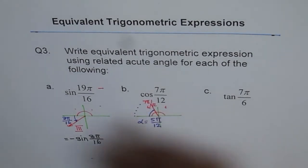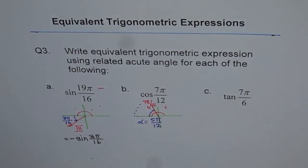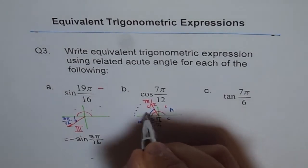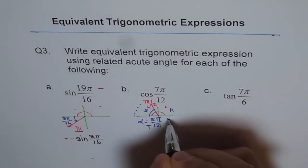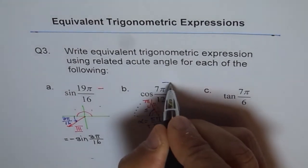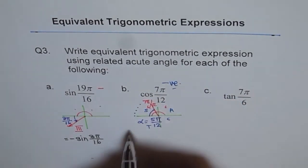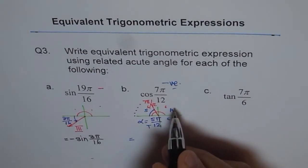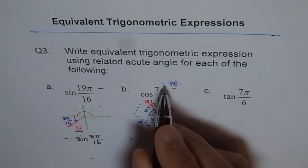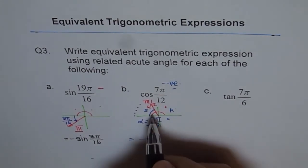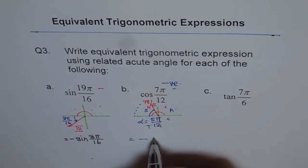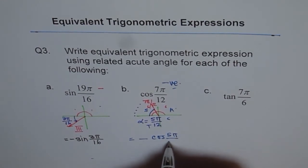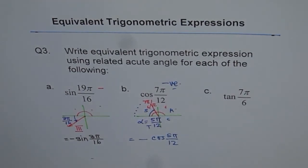Now cos is negative here. How do we know? Cos rule. C, A, S, T. So here only sine is positive. Cos is negative. So we are looking for a negative answer. Do you see that? So we can write this as related acute angle will always be positive. All are positive here. So we will write it with negative. Negative of this angle. That is cos 5π by 12. And you get it. So simple as that.